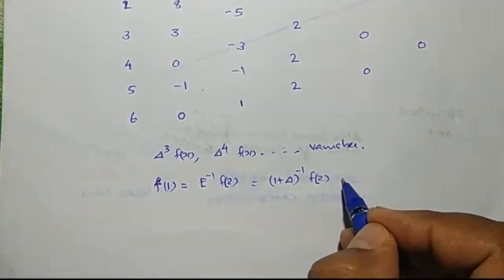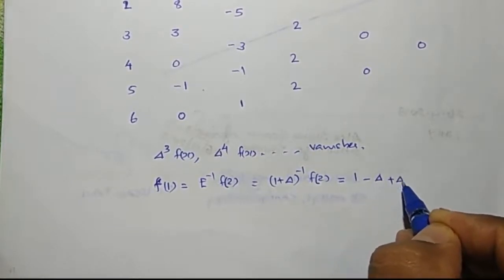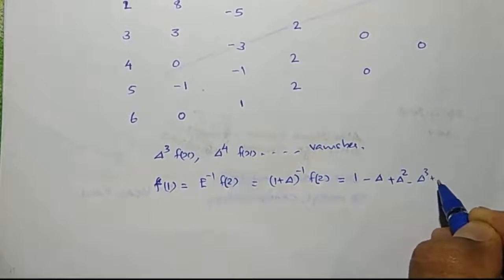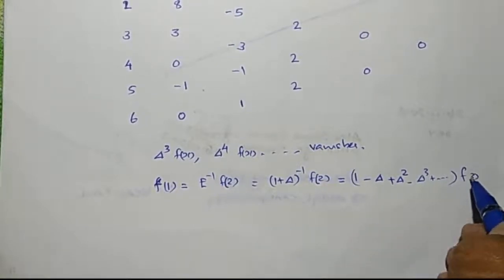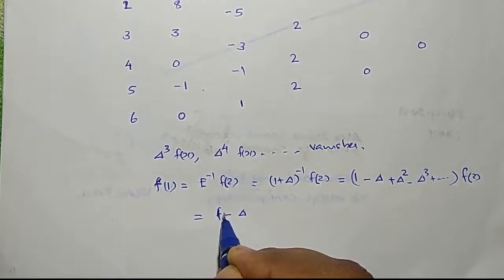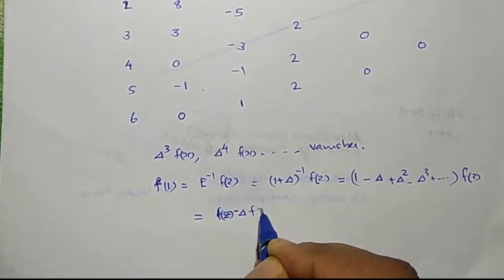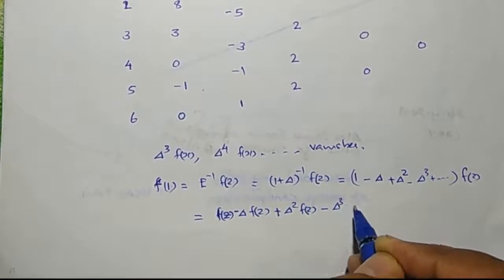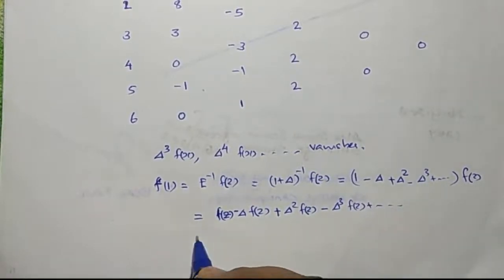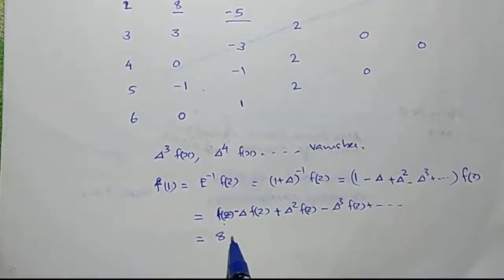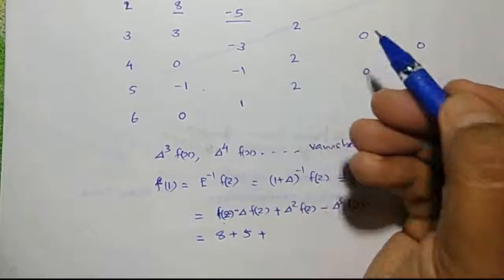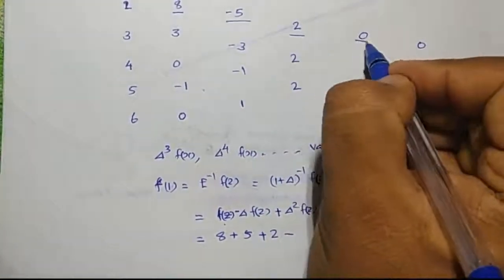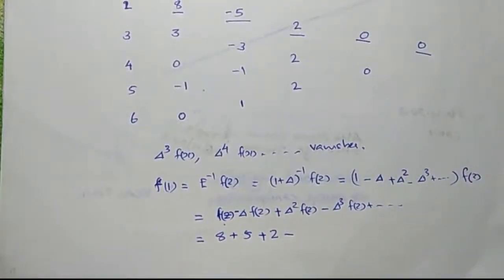For x equals 1 we use the relation f of 1 equals E raised to minus 1 f of 2, which equals 1 minus delta plus delta squared minus delta cubed plus etc. into f of 2. This equals f of 2 minus delta f of 2 plus delta squared f of 2 minus delta cubed f of 2. Substituting: f of 2 is 8, delta f of 2 is minus 5, delta squared f of 2 is 2, and delta cubed f of 2 is 0.